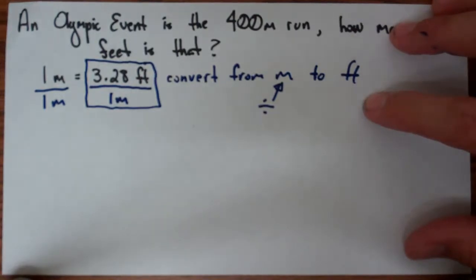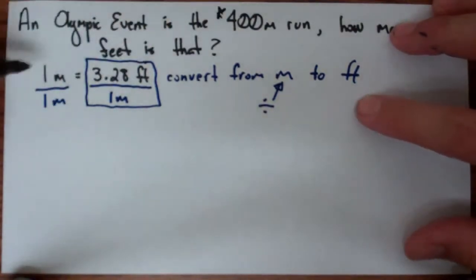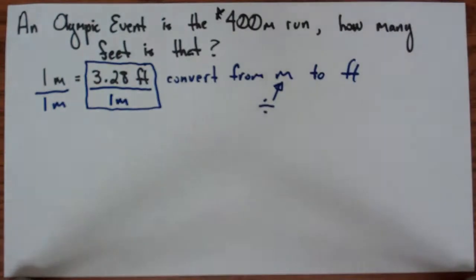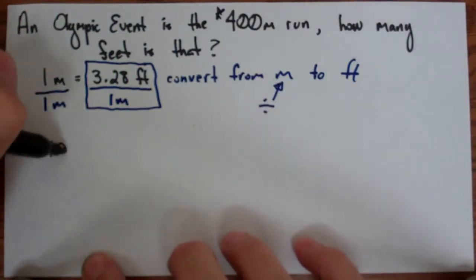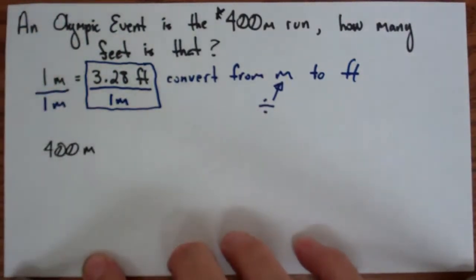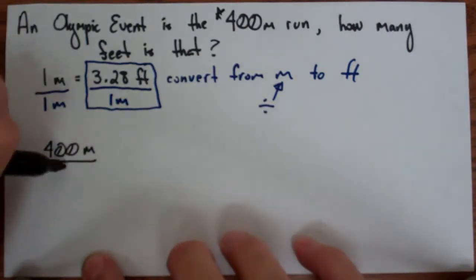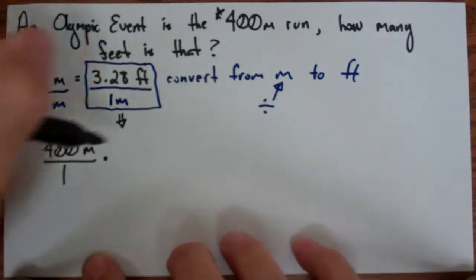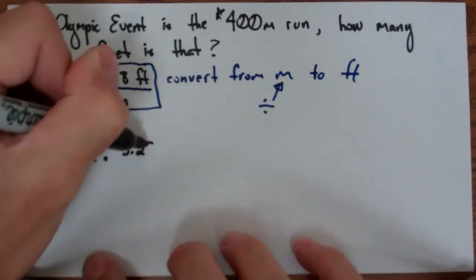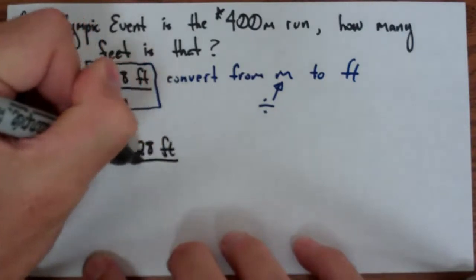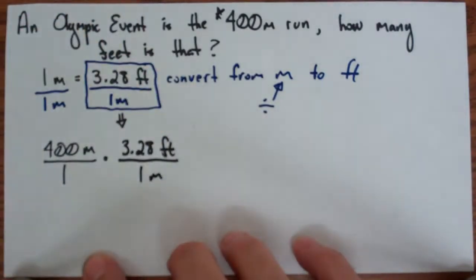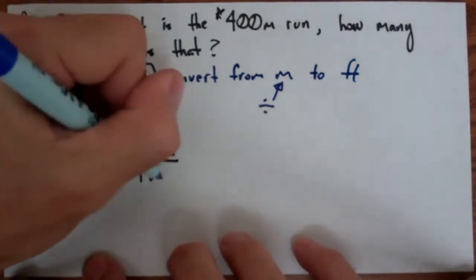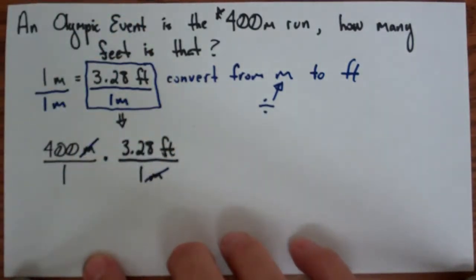So now we're going to take the 400 meter run, and go ahead and take 400 meters, and rationalize it, put it all over 1, and then I'm going to multiply that by my unit conversion, 3.28 feet per 1 meter. And so now the meters over meters will reduce and no longer be part of the problem.